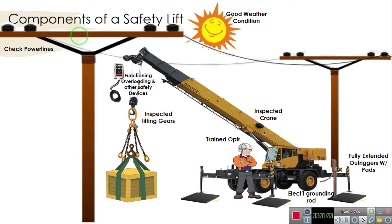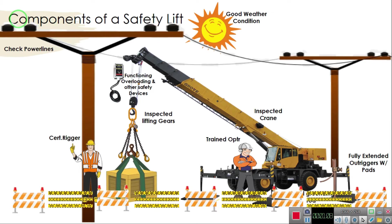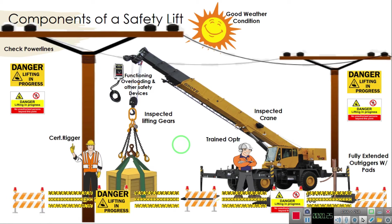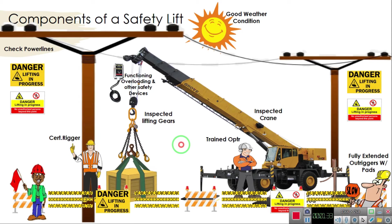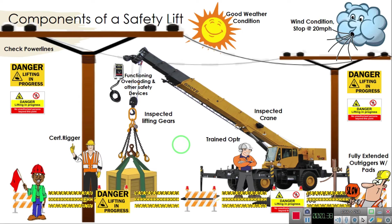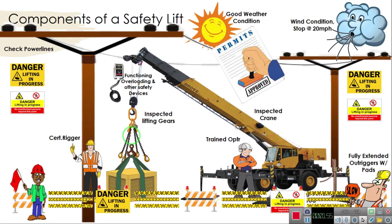Next, load rigged by a certified rigger. Next, total barricade — barricade the whole perimeter of the lifting radius. In case of a night lift, lighting must be provided. Next, complete with signages. Flagman and other crowd control personnel must be present. Wind condition must always be monitored — when wind reaches 20 meters per hour, the operator or other personnel may stop the operation. And lastly, all permits must be signed and approved.